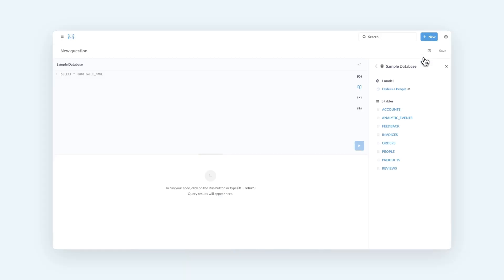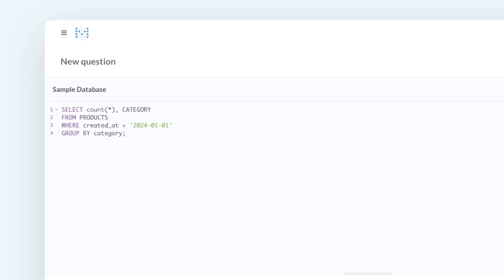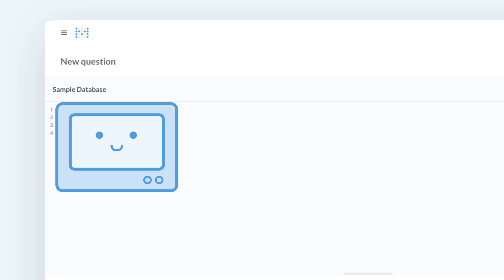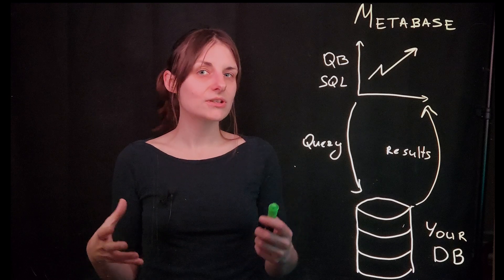When you write a query using SQL, Metabase just sends it to the database. As far as Metabase is concerned, your SQL query is a black box. Metabase doesn't parse the SQL code so it doesn't know which tables you're querying, which columns you're selecting, what aggregations you're using, and so on.